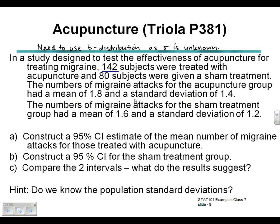We're going to compare the intervals here. We have 142 subjects treated with acupuncture and they have a mean of 1.8 and a standard deviation of 1.4. We have 80 subjects given a sham treatment and they had a mean of 1.6 and a standard deviation of 1.2.